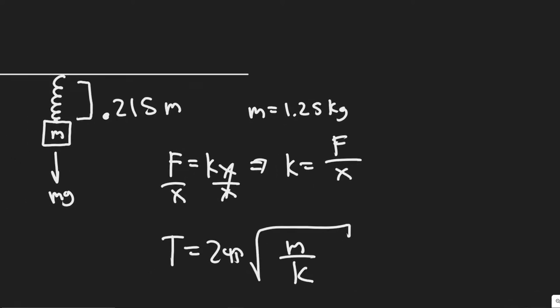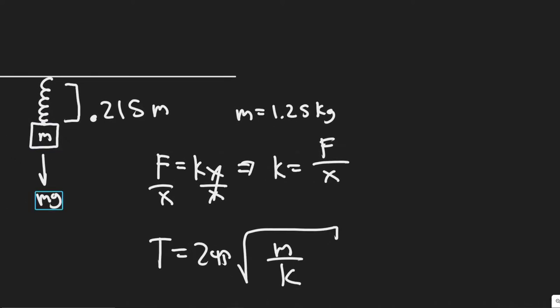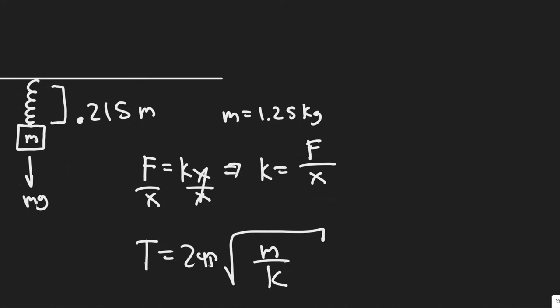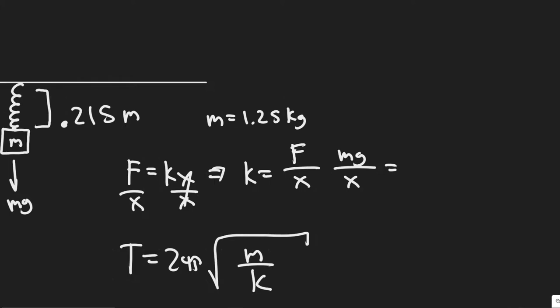So I know the force that's going to be pulling down on it is equal to mg. The force due to gravity is pulling it down and stretching the spring. So the force is just mg divided by x. So we know that.